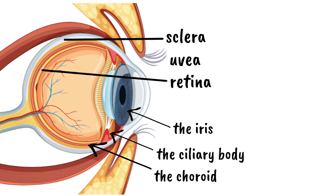When we say someone has uveitis, we're talking about inflammation in any part of this uveal system. It's like having your eye's infrastructure become inflamed and irritated, similar to how your throat gets red and swollen when you have strep throat, except this is happening inside one of your most precious organs.